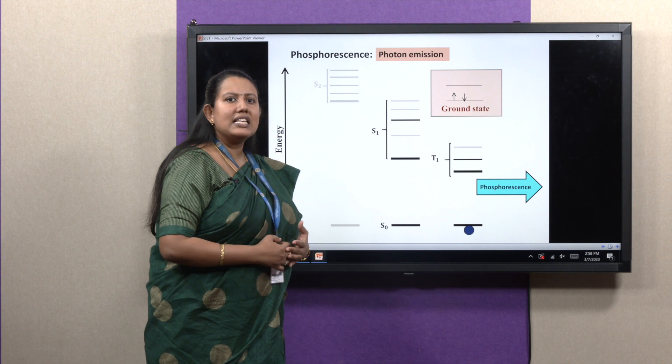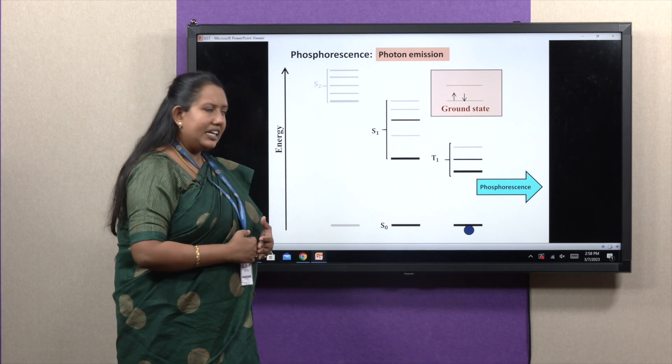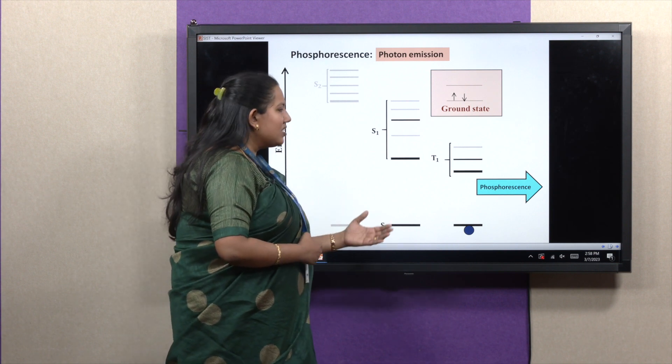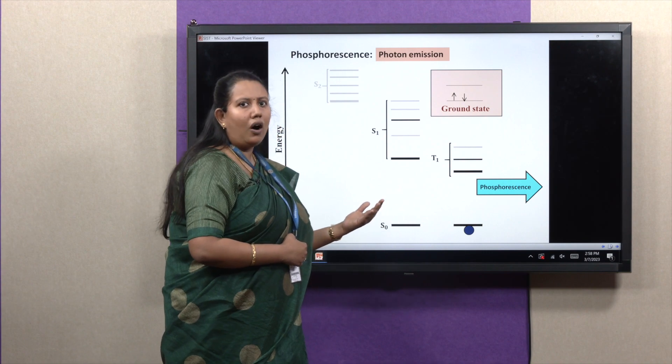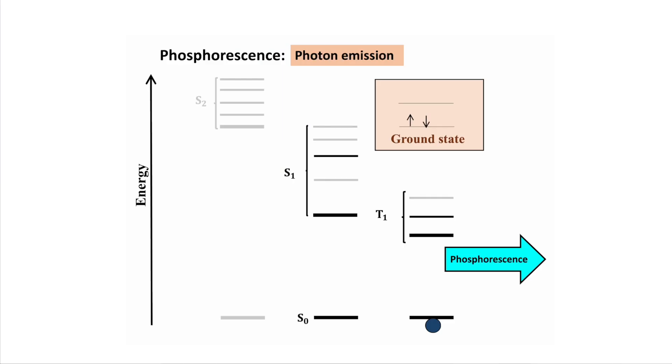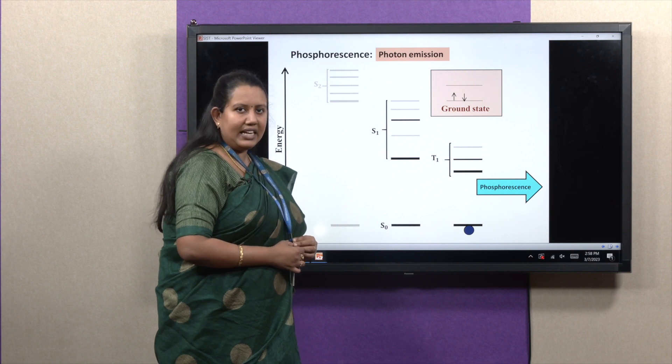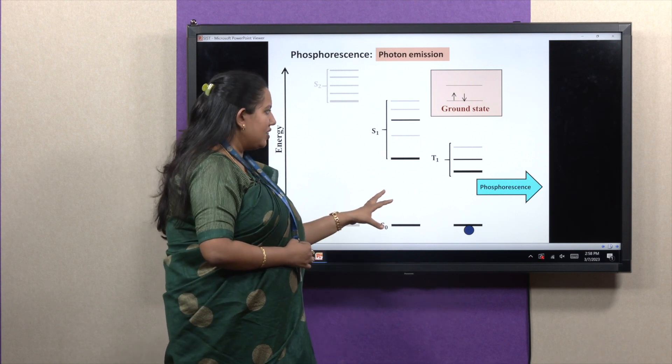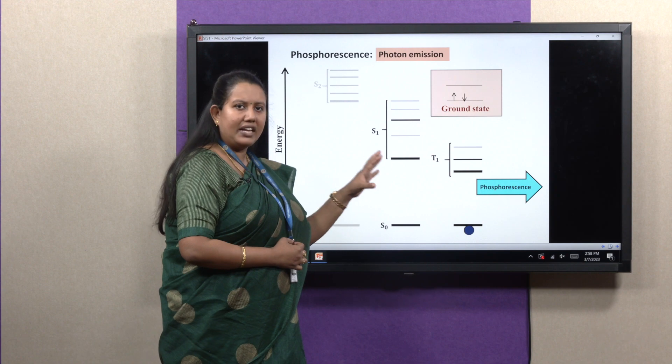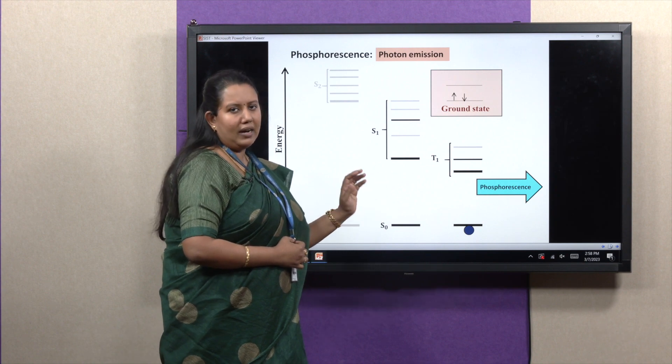Whereas phosphorescence is the delayed emission. It takes longer time because spin flipping occurs. This is a forbidden process. So phosphorescence lifetime comes in millisecond range, the range of phosphorescence lifetime is 10 to the power minus 4 to 10 to the power minus 1.